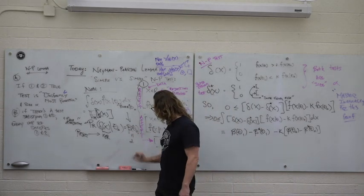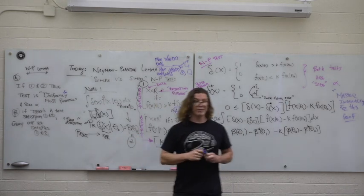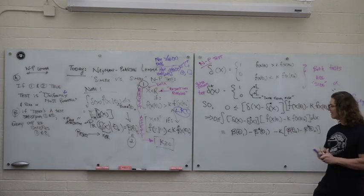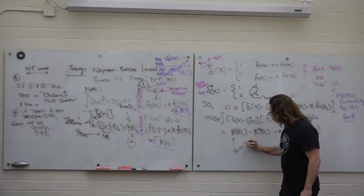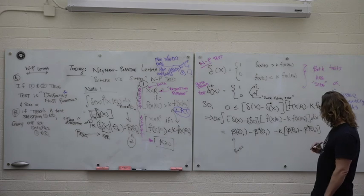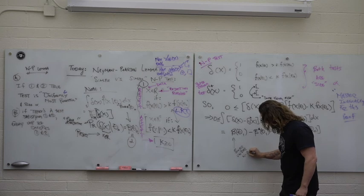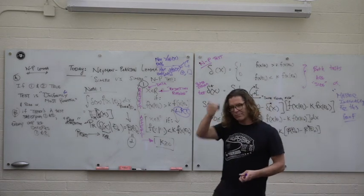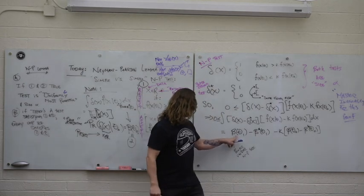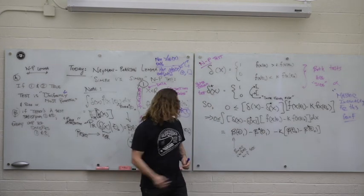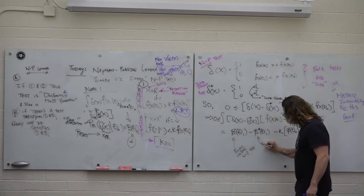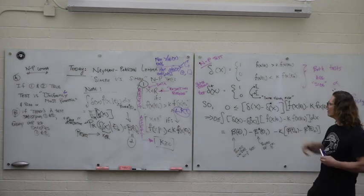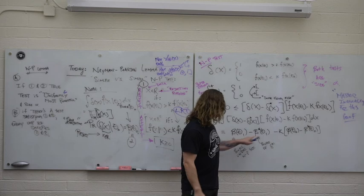This is the power under the NP test — the probability of rejecting when the alternative is true, which we want to be big. We're going to see that this probability is bigger than the corresponding one for the other test, and that's going to conclude our proof. That other value is the power of some other test. Ultimately we want to show the NP test's power is bigger than that, and that will conclude our proof.